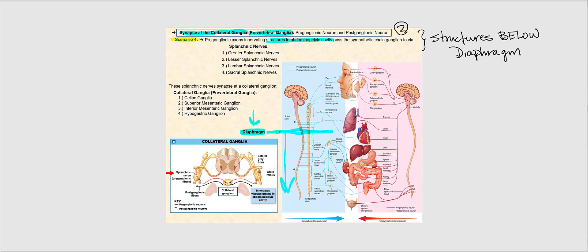I'd like you to memorize the splanchnic nerves — this is where we are going to find the axon of the sympathetic pre-ganglionic neuron. I'd also like you to memorize the collateral ganglia where the actual synapsing between the pre- and post-ganglionic neurons occurs: the celiac ganglia — we have two, that's why it's ganglia — one superior mesenteric ganglion, one inferior mesenteric ganglion, and one hypogastric ganglion.